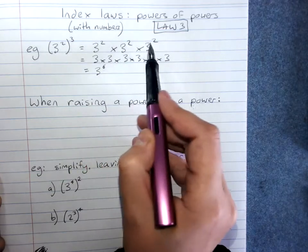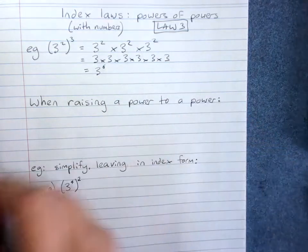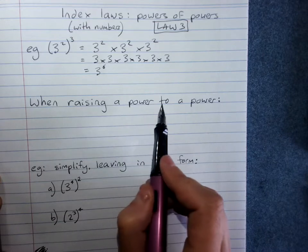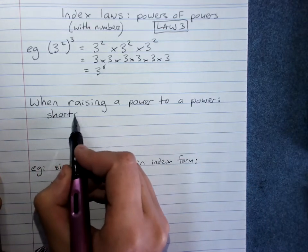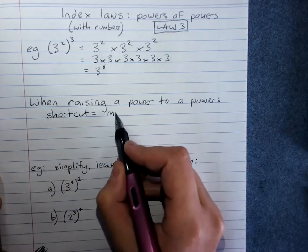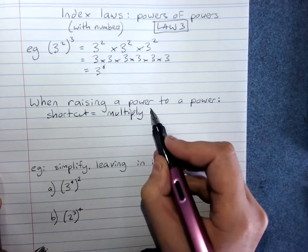3 lots of 2 gave me that 6. So my shortcut, when I'm raising a power to a power, shortcut equals multiply the indices.